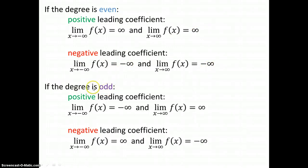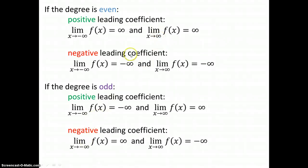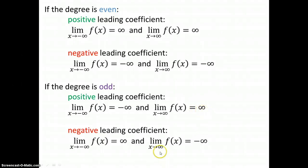If the degree is odd — the degree being the highest power in your polynomial — if the degree is odd and you have a positive leading coefficient, then you're going to go down and then up: down on the left and up on the right. Negative leading coefficient, you're going to do the complete opposite. Sometimes students memorize these from looking at their limits. The limit is negative infinity here, positive infinity there, and then the opposites on the negative version.